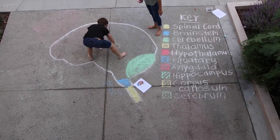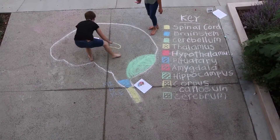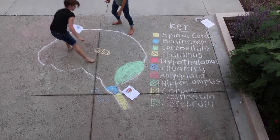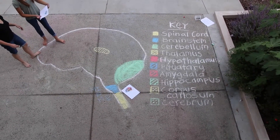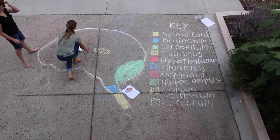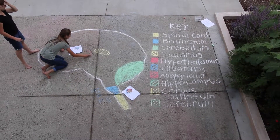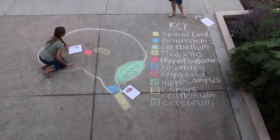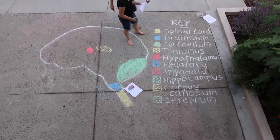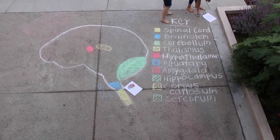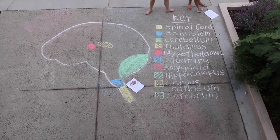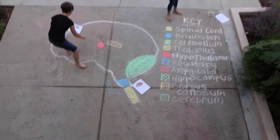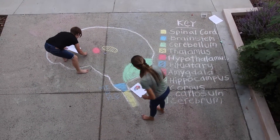Now let's move on to the hypothalamus. It is just below the thalamus and is considered to be in the limbic system. This is one of the most important parts of the brain. It directs several maintenance activities such as eating, drinking, maintaining body temperature, and homeostasis. It also helps govern the endocrine system via the pituitary gland and is linked to emotions and reward. Other important functions include storing nutrients, emotions, motivation, hunger, sex drive, and aggression. Make sure you thank your hypothalamus!